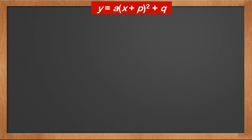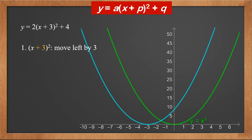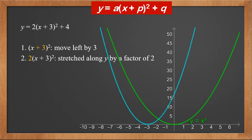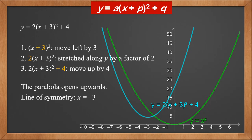Now that we know all transformations, let's put them together and look at the graph of y equals a times (x plus p) squared plus q. Take y equals 2 times (x plus 3) squared plus 4. First, (x plus 3) squared moves the graph along the x axis to the left by 3 units. Second, 2 times (x plus 3) squared stretches along the y axis by a factor of 2. Third, adding 4 moves the graph up along the y axis by 4 units. After these 3 transformations, we get the final graph. The parabola opens upwards because a is 2, which is positive. The line of symmetry is x equals minus 3. The vertex is (minus 3, 4). It is the lowest point, so the minimum y value is 4, when x is minus 3.